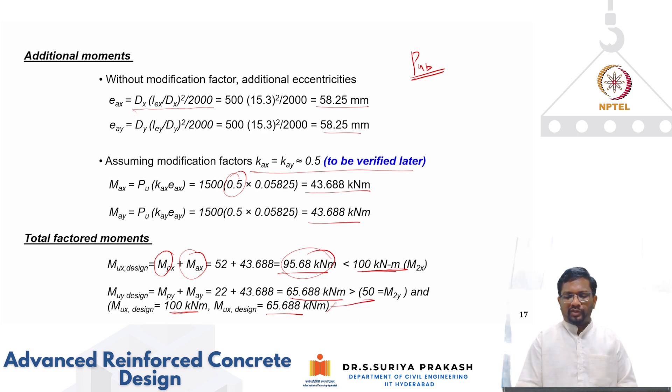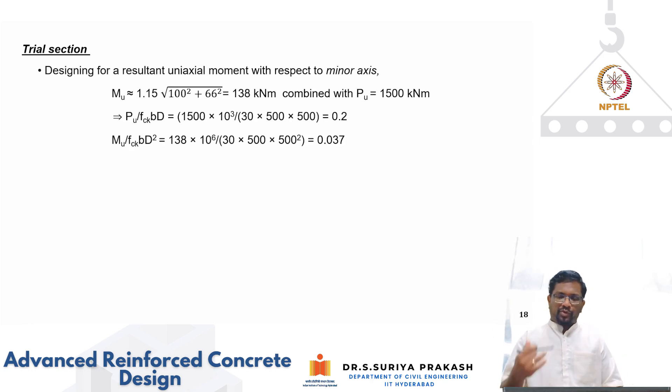So if you do that trial section again, same process what we follow for biaxial bending. I convert them into an uniaxial bending moment and I increase it by about 15 percent. So I get a uniaxial bending moment of 138 kNm for an axial compression of 1500 kN. So again we are going to use SP-16. So now I know my axial demand and bending demand. So small pu which is Pu by fck×b×d works out to be 0.2 and mu by fck×b×d² which is 0.037.